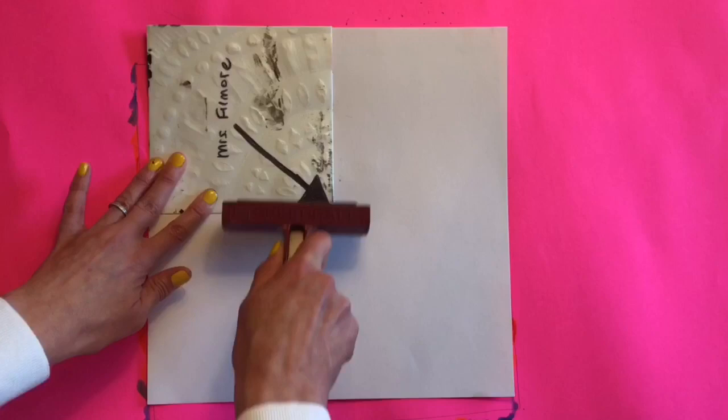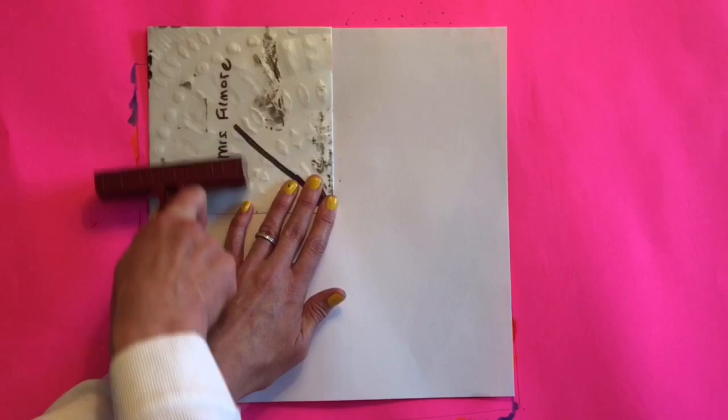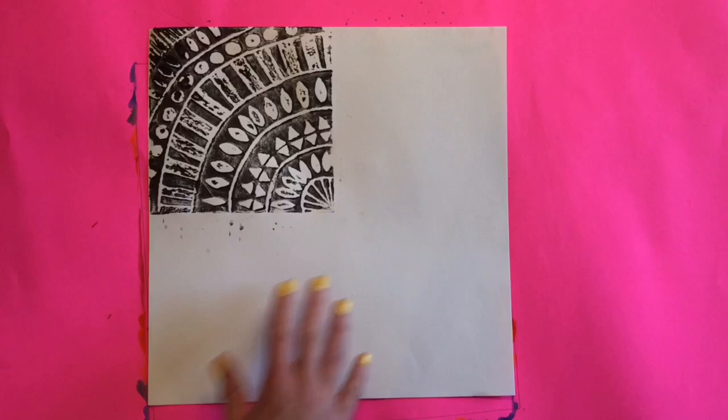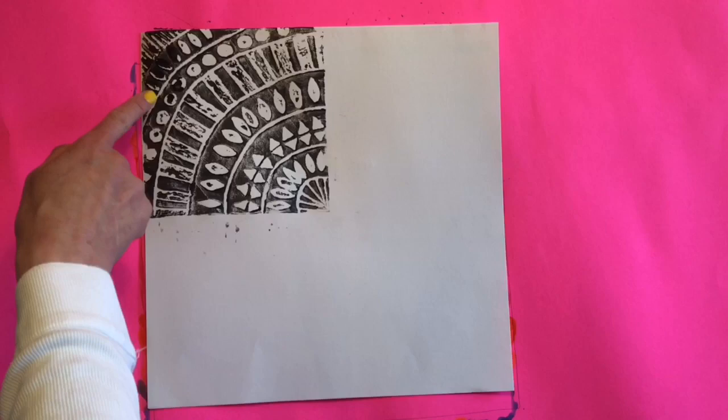Once you've rolled over it a few times, then lift it off. And this action of lifting it off is called pulling a print. And you'll notice right about here is where I probably added a little too much paint. But that's why we're creating a practice print first.